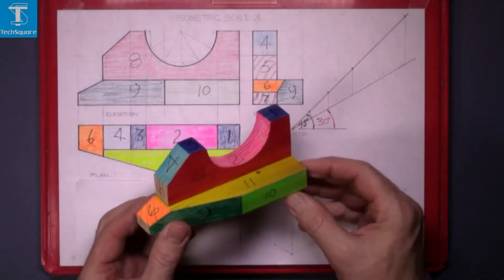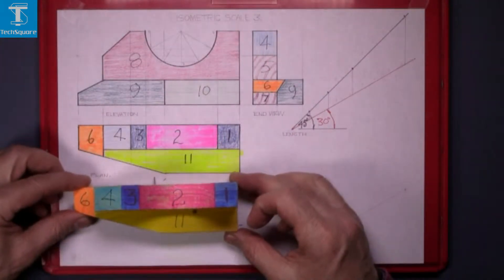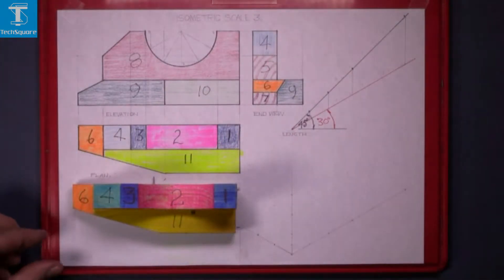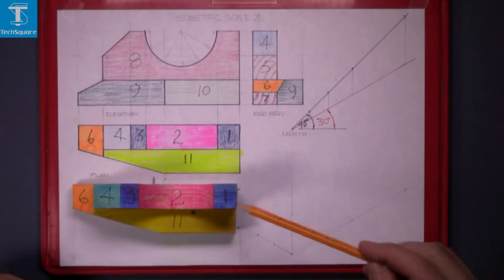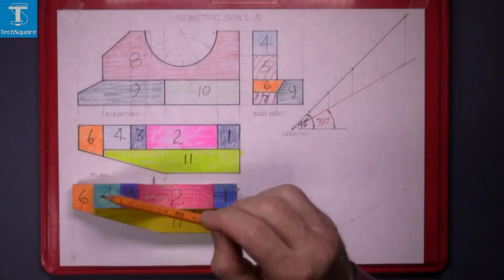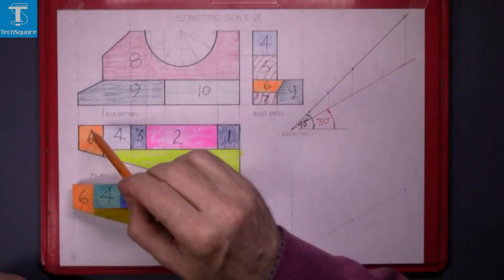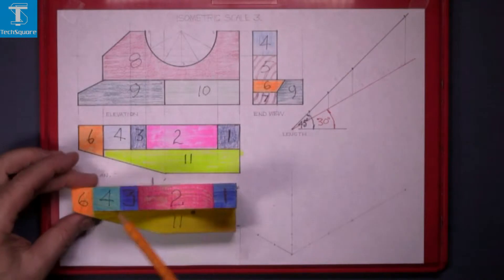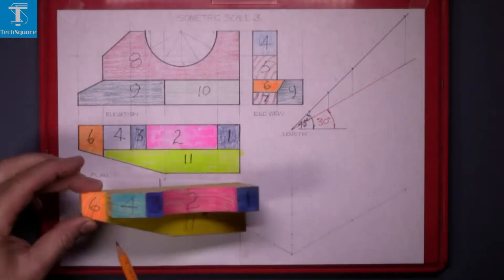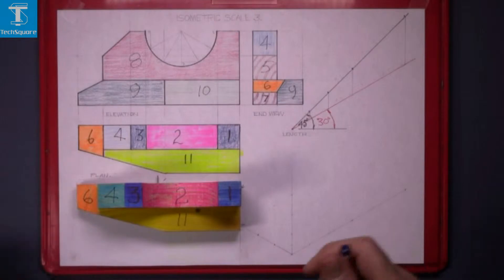This is the model. When you look directly down, that's the view. So it was 1, 2, 3, 4 and 6. 5 is at the end and cannot be seen in this position. And 11 is at the front.